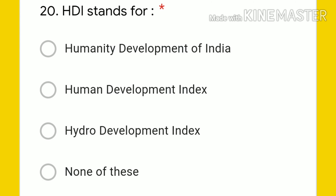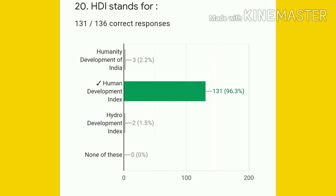Question 20: HDI stands for — Humanity Development of India, Human Development Index, Hydro Development Index, or none of these? The answer is Human Development Index. 131 students gave the right answer — 96.3 percent. Very few students, 5 to 7, chose options 1 and 3.